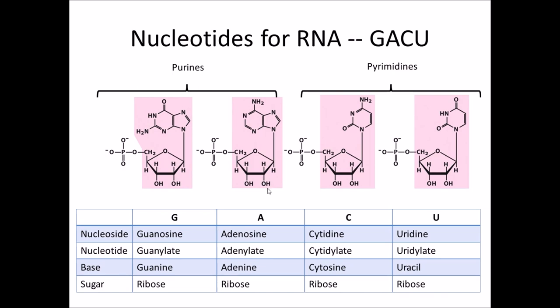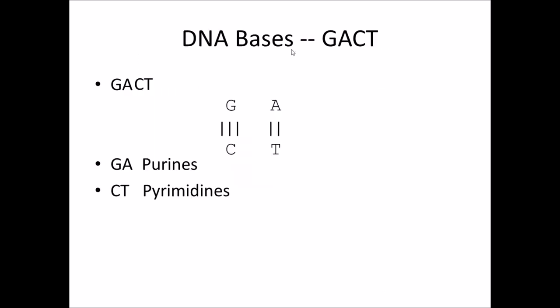That means RNA is actually more reactive. A hydroxyl group can react with things much more easily than just a saturated carbon. Some of these bases are called purines — the ones with the double ring structures. The ones with the single ring structure are called pyrimidines.